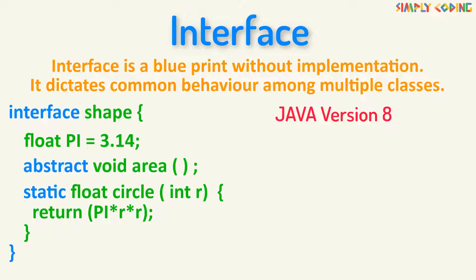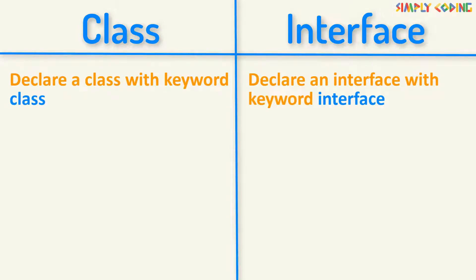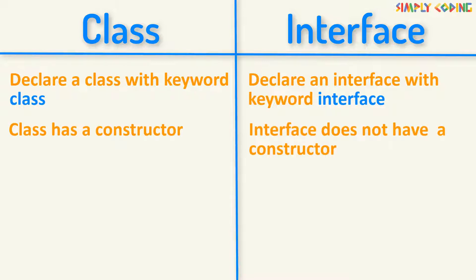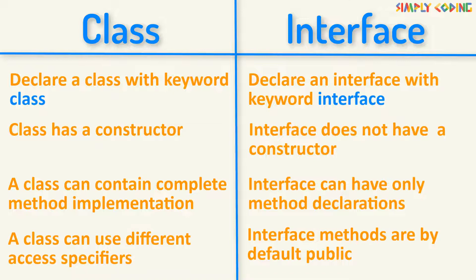If the implementing class does not provide an implementation for the method, then the default body will be executed. Since Java 8, we can also have static methods in the interface. Interface might look like a class, but it is not. A class is declared with the keyword class and an interface with the keyword interface. A class has a constructor but an interface does not. A class can have complete method implementation, but an interface contains only method declarations. A class can use different access specifiers such as public, protected, and private, but by default interface methods are public.